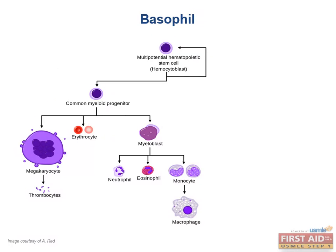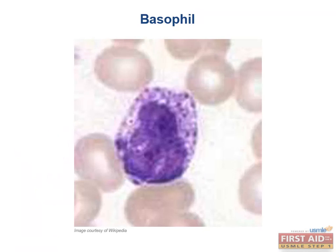Next we have the basophil — a myeloid lineage granulocytic leukocyte that is involved in allergic reactions and that only accounts for less than 1% of total leukocytes. These are intensely basophilic cells that stain purple with basic dyes due to dense basophilic granules. Note that these granules, unlike eosinophils, do obscure the nucleus and make its shape very difficult to make out. During certain inflammatory reactions, these cells release granules containing heparin, which prevents clotting, histamine, vasoactive amines, which cause vasodilation and increase blood flow to the tissues, and leukotrienes, which mediate inflammatory response.